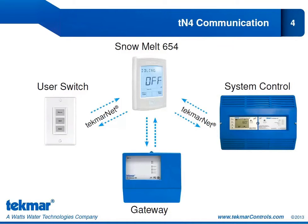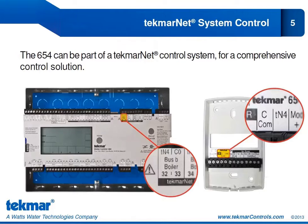As you can see here, we can use Tecmar Net Communication to communicate from the 654 back and forth to a system control, to a Gateway control, and to a user switch. Connecting to a system control will give us a comprehensive control solution, so we can have all of our controls communicating with each other through Tecmar Net, and all of that communication can be coordinated.